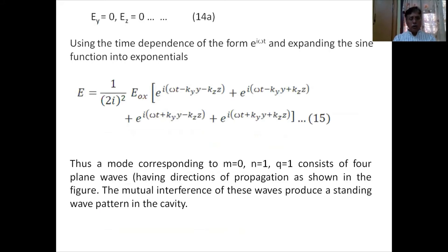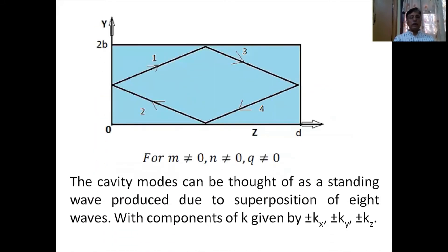A mode corresponding to M=0, N=1, Q=1 consists of four plane waves with directions of propagation as shown. Their mutual interference produces the standing wave pattern in the cavity. If none of M, N, Q is zero, the cavity modes consist of the superposition of eight plane progressive waves.